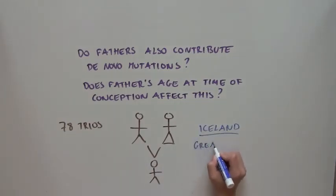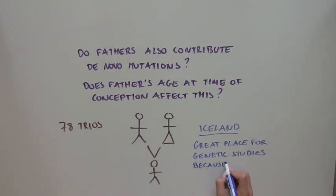Iceland is a great place to perform genetic studies, because there has been very little migration into and out of Iceland. So individuals in Iceland all have very similar DNA. This makes it easier for scientists to find mutations or differences in the DNA sequence.